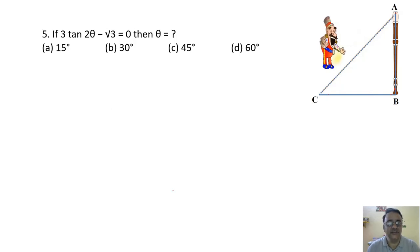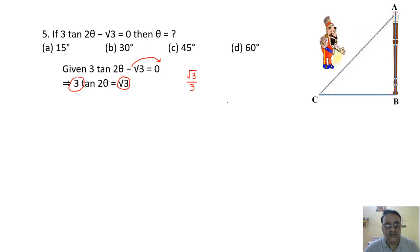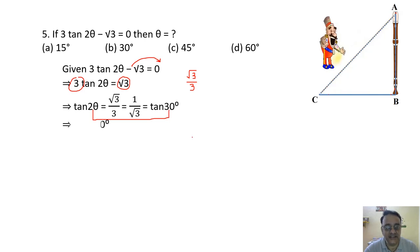Question 5: 3tan 2θ − √3 = 0, find θ. Shifting: tan 2θ = √3/3 = 1/√3. Since tan 30° = 1/√3, we get 2θ = 30°, therefore θ = 15 degrees. The correct option is option A.